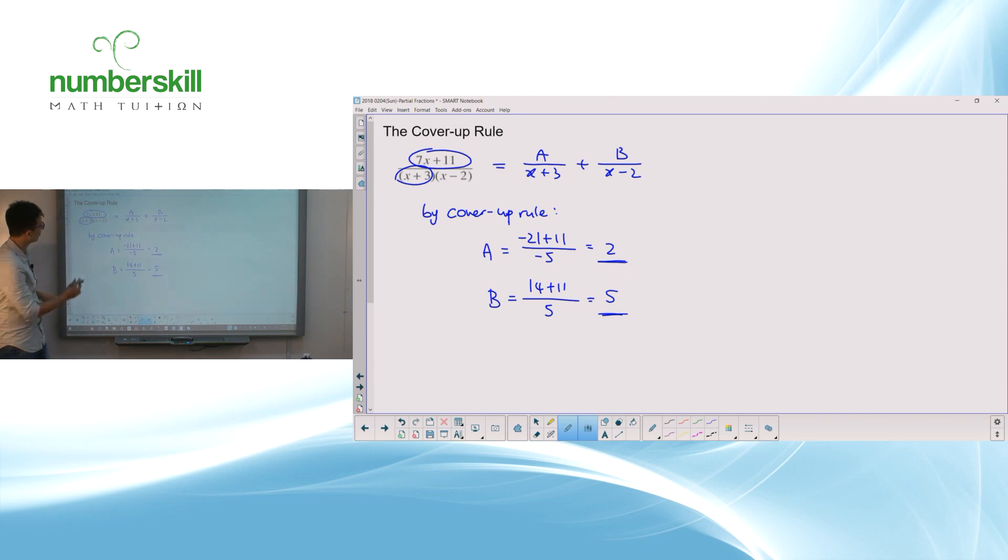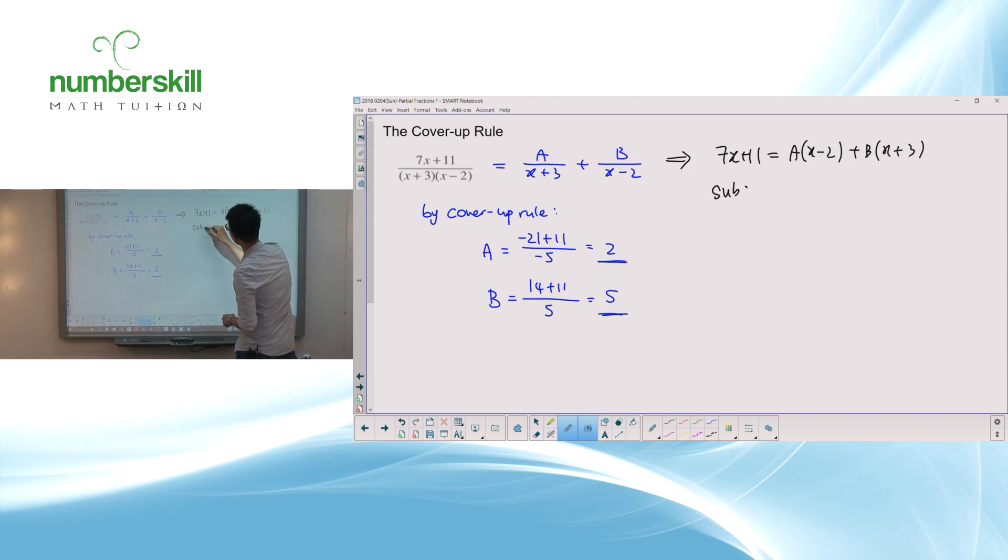Is it missing sure or not? Let me show you the original way that you learned it. Original way is like that. 7x plus 11 equals to A times x minus 2 plus B times x plus 3. So if I want to find A, I have to substitute x equals to minus 3. And when I substitute x equal to minus 3, I'm going to get minus 21 plus 11 equals to minus 5A. Where A then becomes minus 10 divided by minus 5, which is 2.